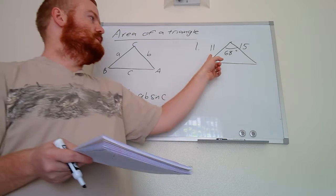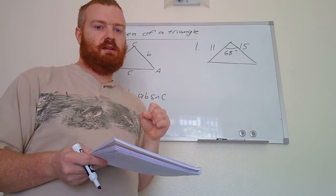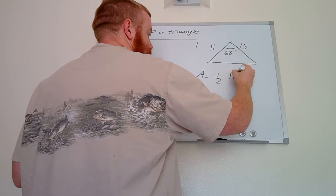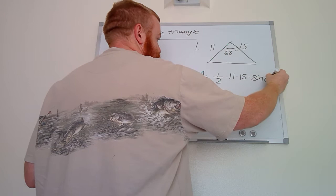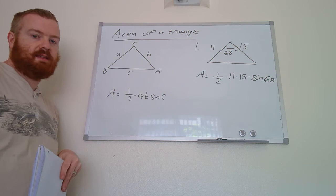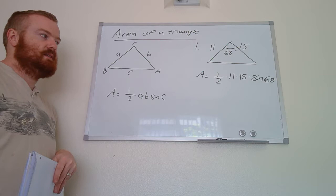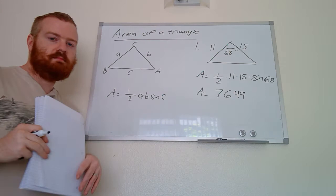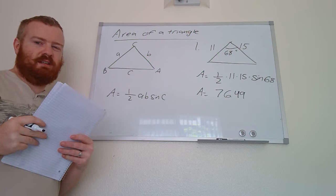Looking at this example, we have sides 11 and 15, and between those two we have the angle 68 degrees. So the area is going to be one-half multiplied by 11, by 15, and by the sine of 68. You plug this into the calculator — one divided by two, times 11, times 15, times sine of 68 — and the area is going to be 76.49.